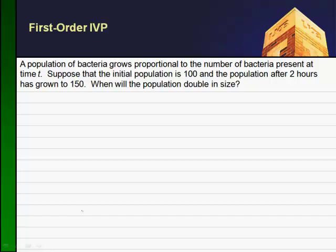Let's suppose that the initial population is 100 and the population after two hours has grown to 150. So we want to know when will the population double in size. Let's first take on what it is that we're given. We have a population of bacteria that grows proportionate to the number of bacteria present. So we're saying that the rate of change in the population is proportional to the population that's already there.